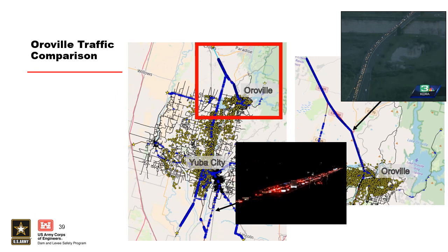But did we get it right in the right places — did we simulate traffic where traffic actually occurred? Looking at Oroville in more detail, the simulation shows blue cars bumper-to-bumper in the northern section. Helicopter footage during the actual event shows bumper-to-bumper traffic all the way through Chico. We matched traffic really well there, and down to the south as well. Overall, this made us feel much better about the traffic simulation engine and the fact that with good data, we can simulate what would actually happen.